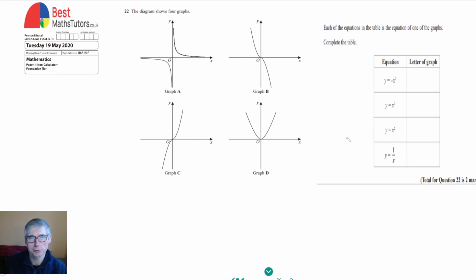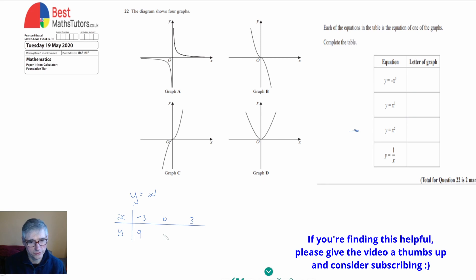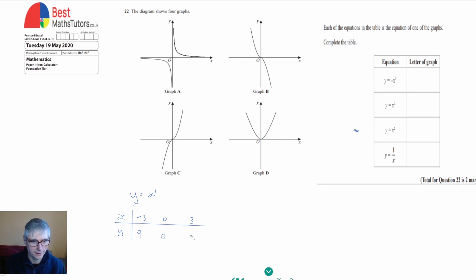The first graph I'm going to look at is y equals x squared, because that's probably the easiest one. I'm going to make a little table and look at some values: x equals minus 3, x equals 0, and x equals positive 3. If we square negative 3 we get 9, if we square 0 we get 0, and if we square 3 we get 9 again.